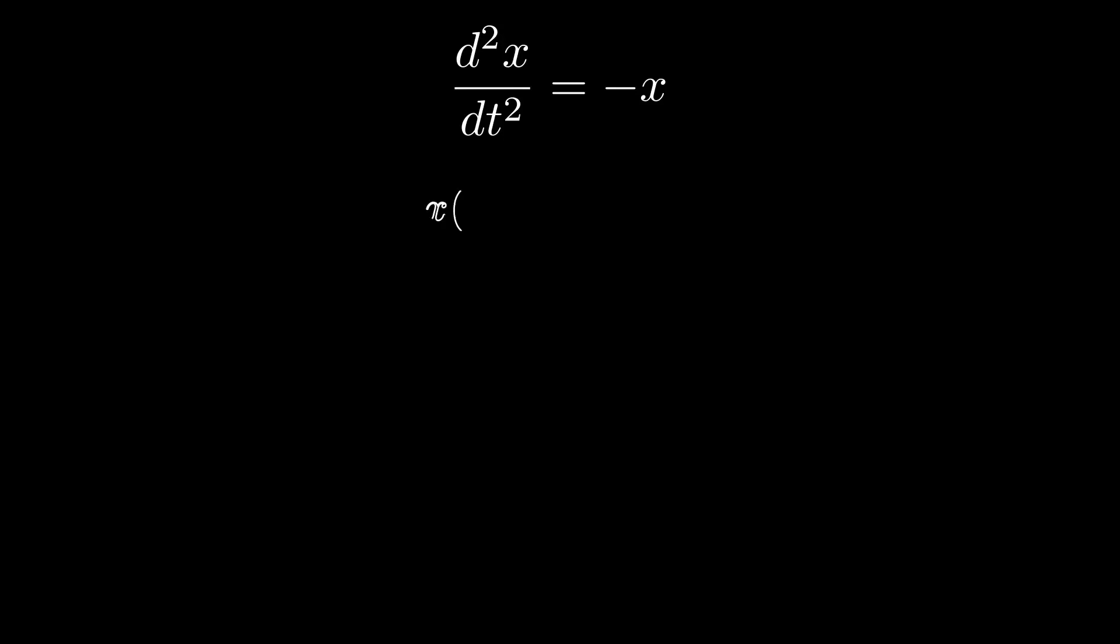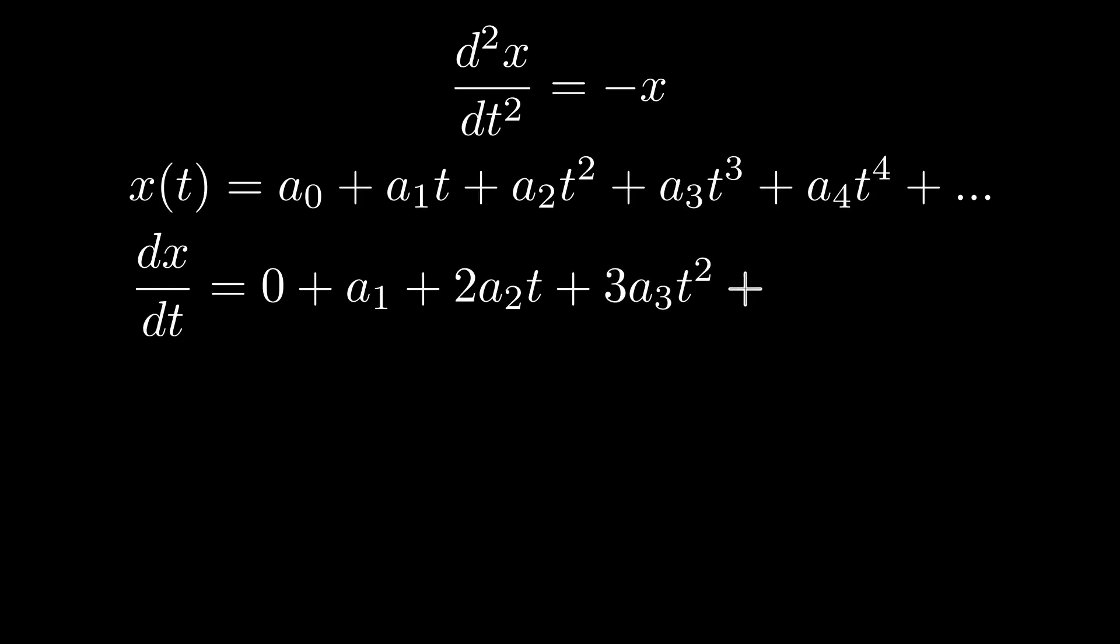Without loss of generality, we can write any differential function x as a power series with infinite terms. Let's write it in the expanded form up to the first 5 terms. Now, we will differentiate it with respect to t. The constant a0 turns 0. Likewise, we get the terms a1 plus 2a2t plus 3a3t square and so on.